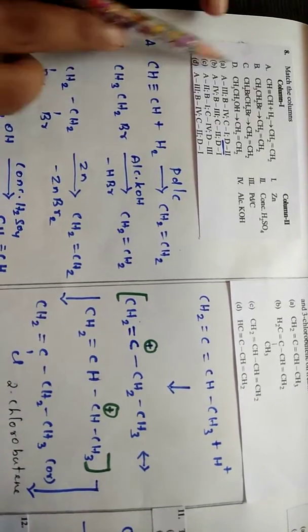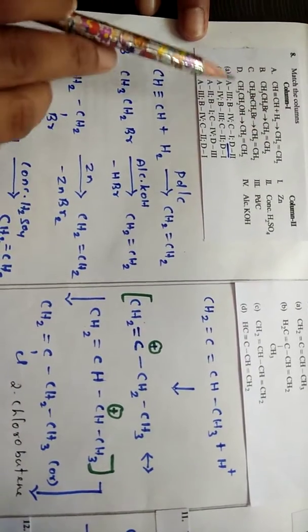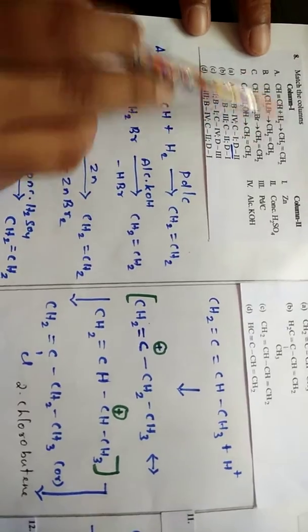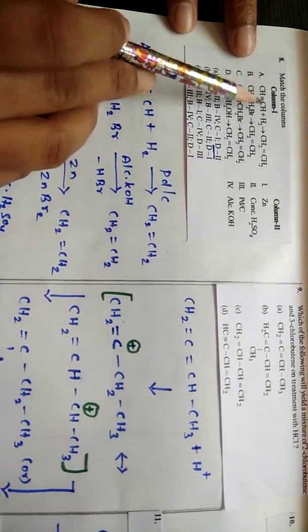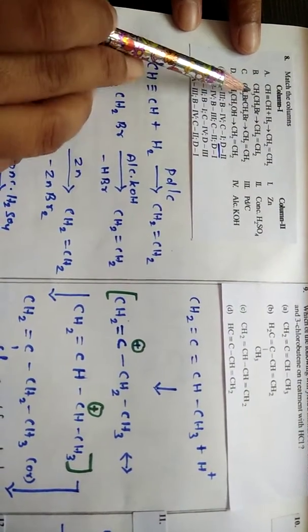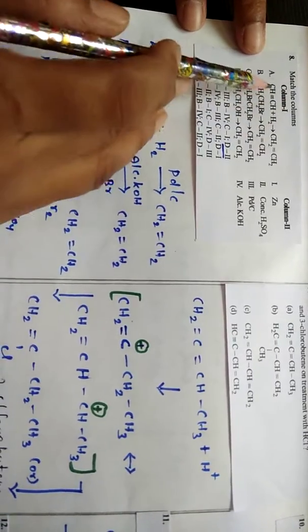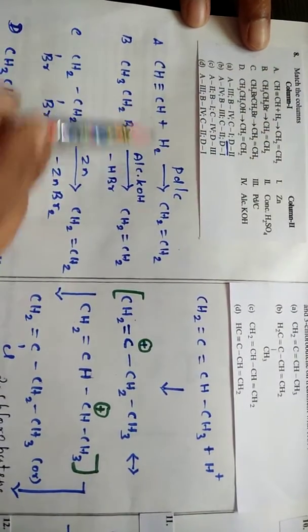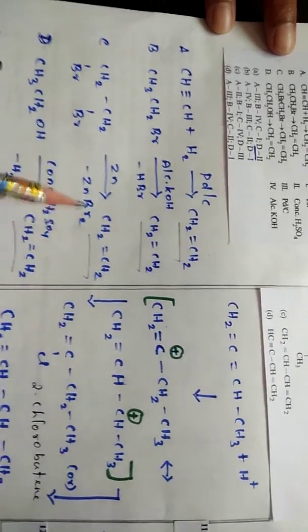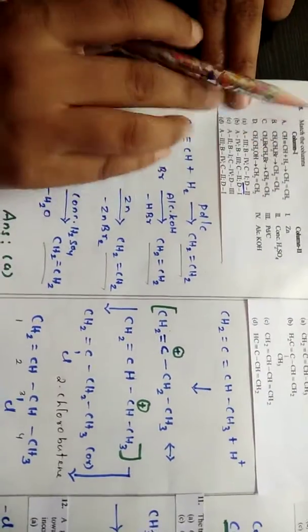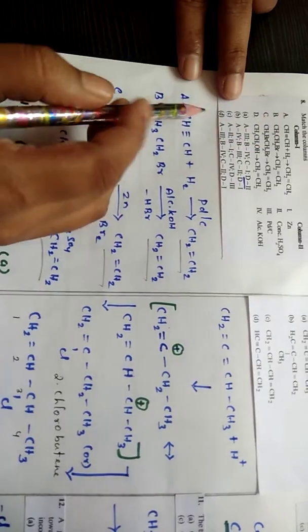Here the 8th question is asking to match the columns. You just see all the reagents and reactants that undergo reaction with ABCD and give only alkene as the product. Only ethene is the product. So now we have to look at what you should know. Just go with that.